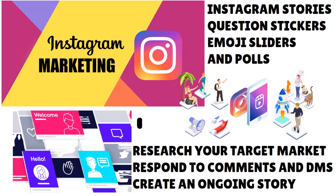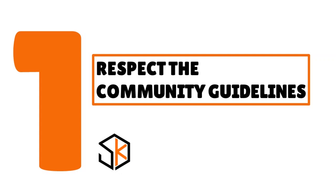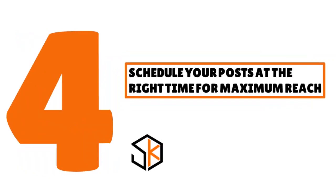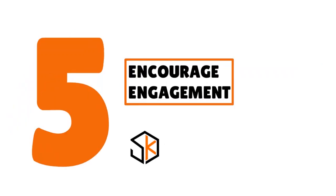User-generated content (UGC) also plays an important role on Instagram. Overall, you have a lot of ways to increase your Instagram engagement. You can ask questions directly to your audience, or encourage commentary with a caption or within the image or video itself — just ask people to comment below. It's all about engaging, requesting comments, and interactions. The Instagram algorithm will reward that. To recap: comply with community guidelines, get creative with reels, consistently share reels, schedule posts at the right time, and encourage engagement.